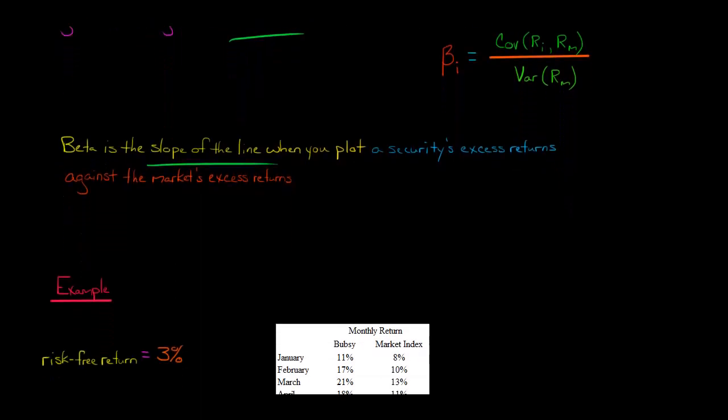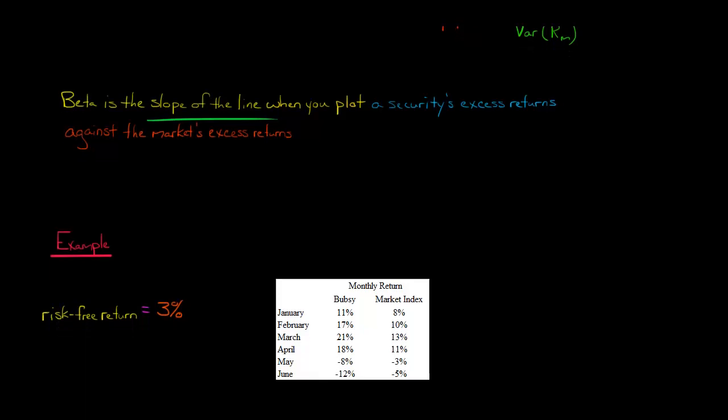Let me show you an example. Say we have monthly returns for six months for a company called Bubsy and a market index, the S&P 500. We have six observations with different returns. For example, in March, Bubsy had a return of 21% and the market index returned 13%.